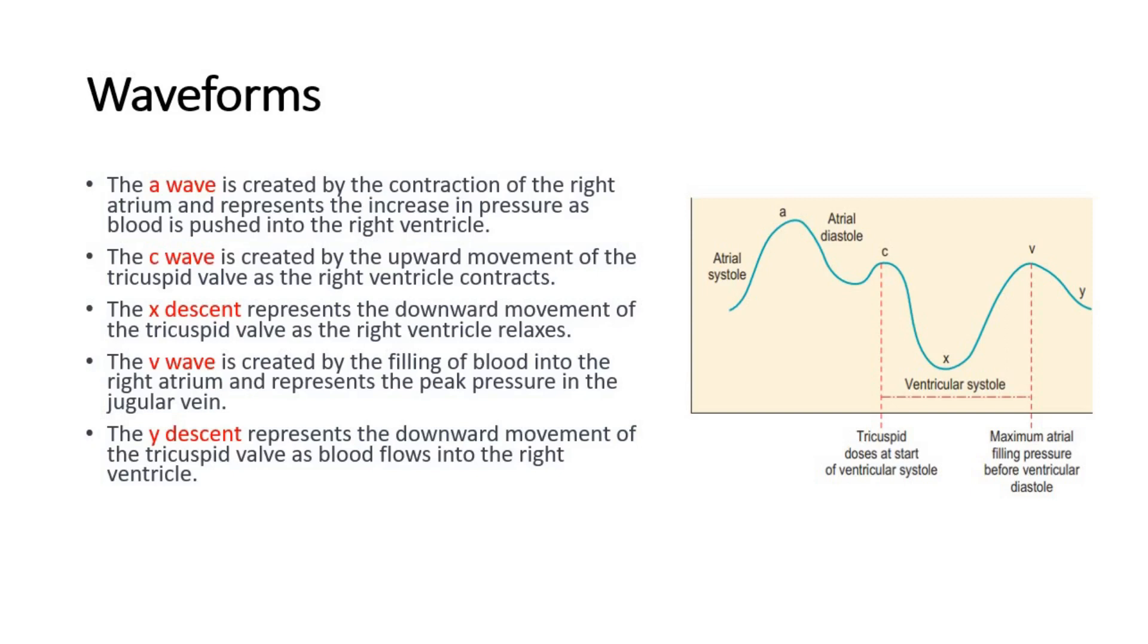The V wave is created by the filling of blood into the right atrium and represents the peak pressure in the jugular vein. The Y descent represents the downward movement of the tricuspid valve as blood flows into the right ventricle.